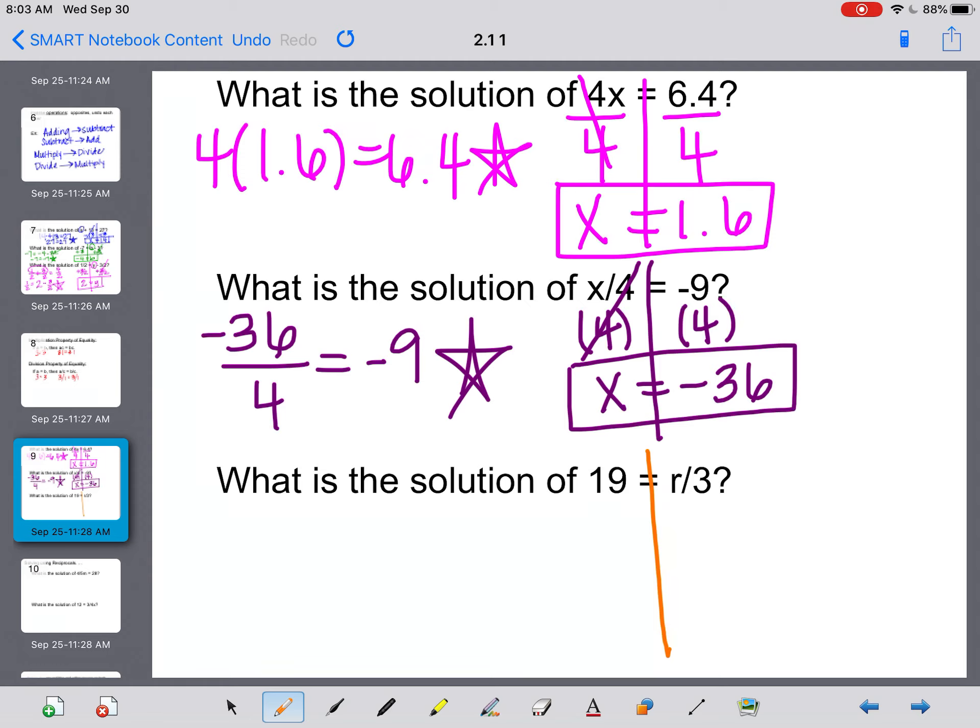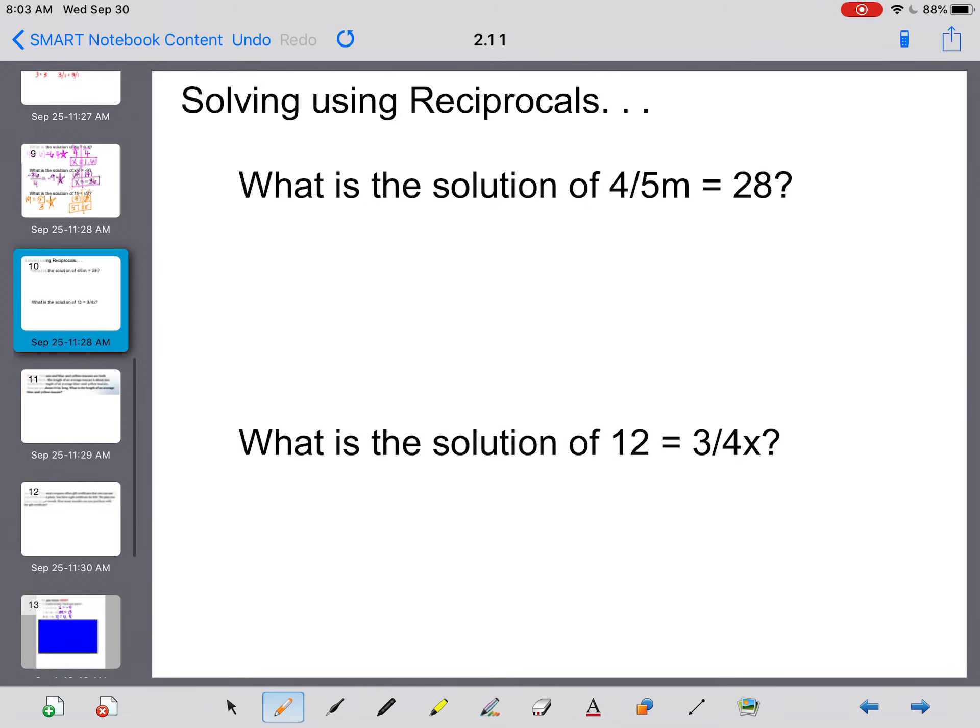What is the solution of 19 = R/3? Since I'm dividing, I need to do the inverse operation and multiply by 3 on both sides. These will cancel, and R will be equal to 57. And then we're going to double check. 19 = 57/3. And if you double check that with your calculator, we've got that one right.